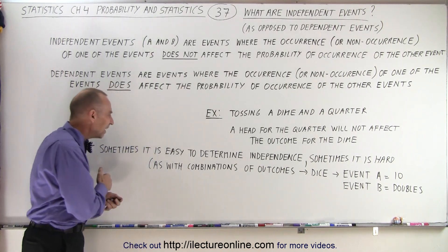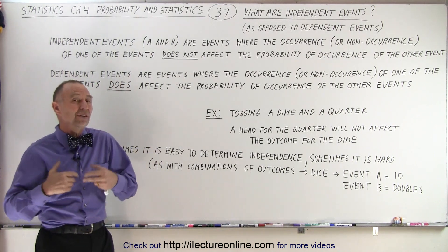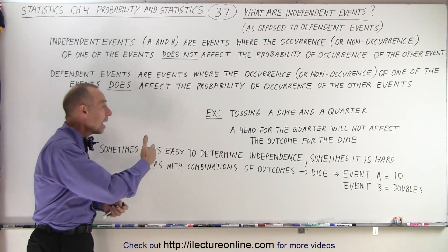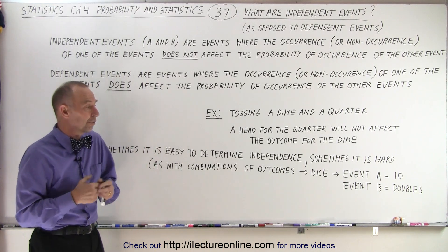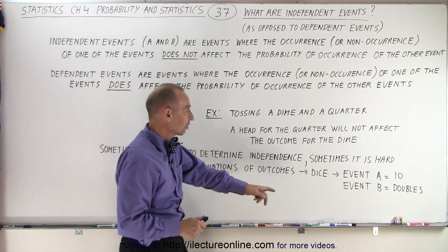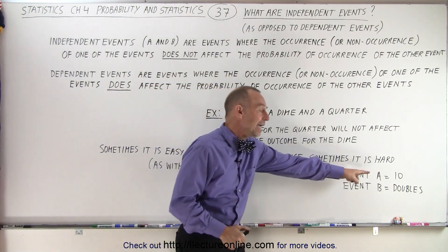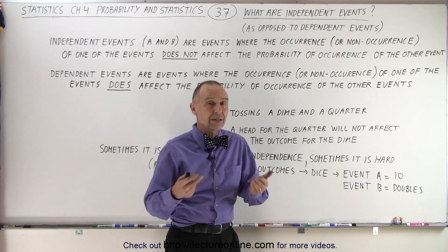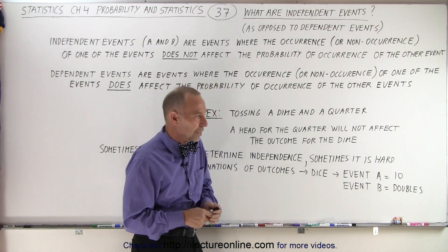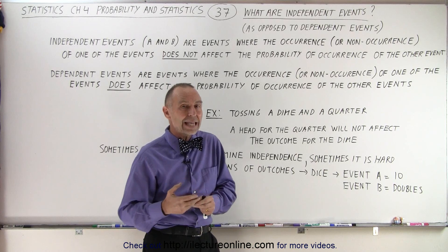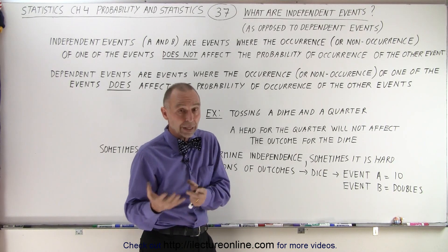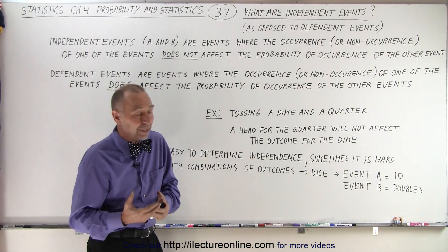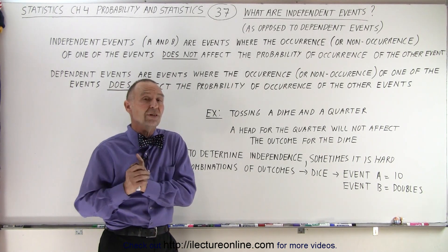But sometimes it's not so easy to determine if events are independent — sometimes it's actually really hard, as with combinations of outcomes. For example, let's say we toss a couple of dice and event A is that we end up with a 10, and event B is that the outcome is a double. Now if event A does occur and we end up with a 10, then event B has a very different probability because there's only one option left.